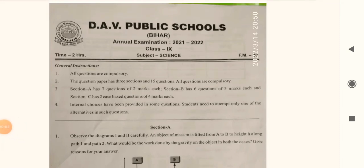Hello friends, welcome back to my channel. Today I'm going to share a question paper of science annual examination 2021 and 2022. Let's begin. Here's the question paper of Bihar zone. Total timing is 2 hours, total number of questions is 15, and the sections are divided into 3 with total marks of 40.